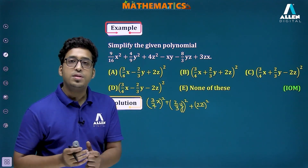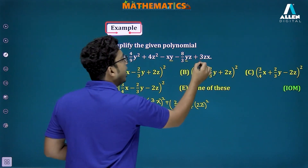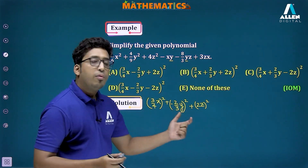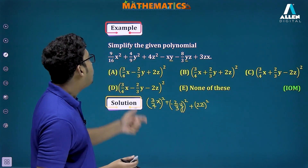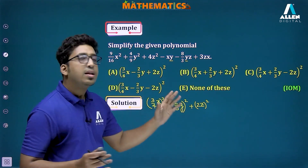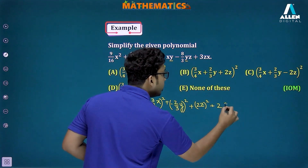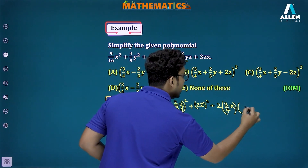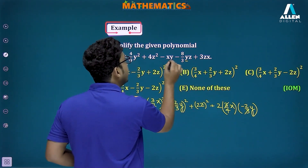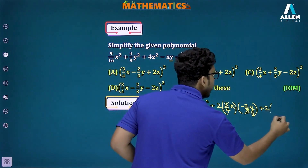Since negative signs appear wherever there is a y term, we can write b = -2/3 y, because (-2/3 y)² = 4/9 y² (square of a negative number is positive). Now we verify 2ab: a = 3/4 x, b = -2/3 y, so 2ab = 2·(3/4 x)·(-2/3 y). The 3s and the factor of 4 cancel, giving -xy, which matches. Checking 2bc: 2·(-2/3 y)·(2z) = -8/3 yz, also correct.